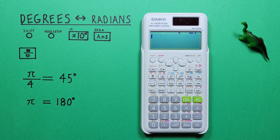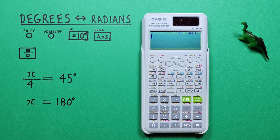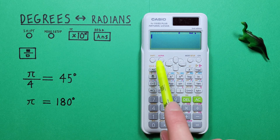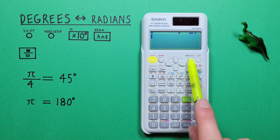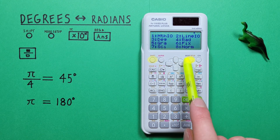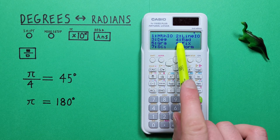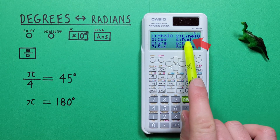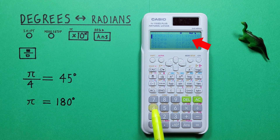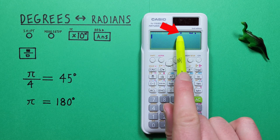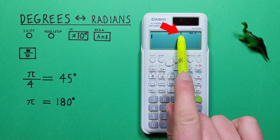But what if we had degrees and wanted to get our result in radians? Again, we have to set our calculator to the mode we want our results in. So we go back to shift, mode key, and now we choose number four for radians. We see the R at the top of our screen letting us know we're in radians mode.